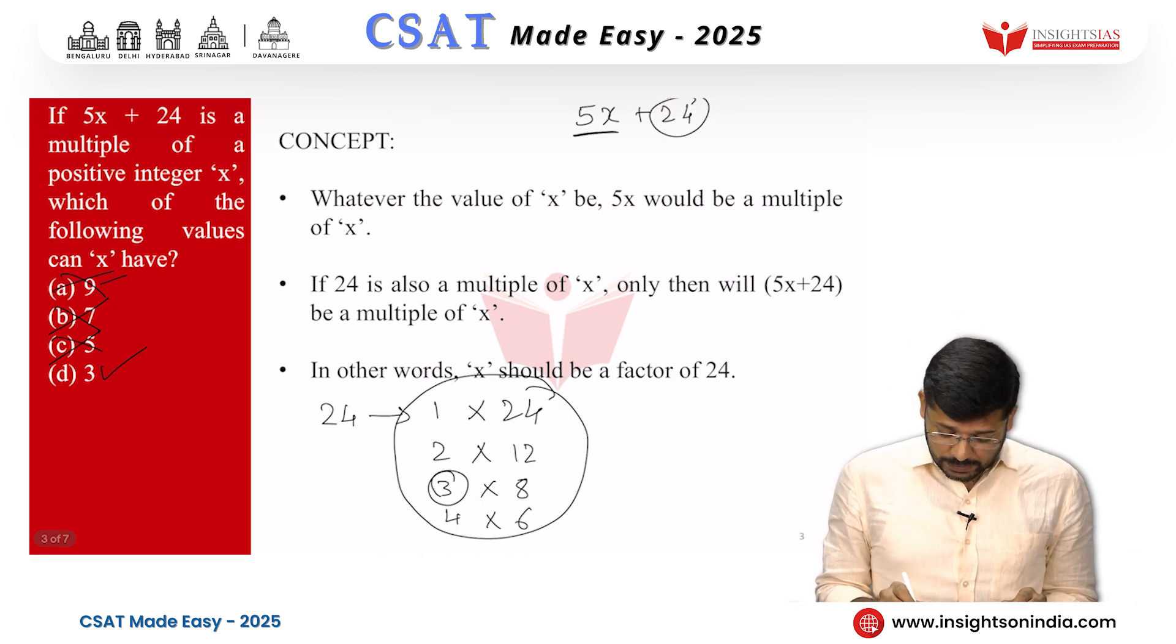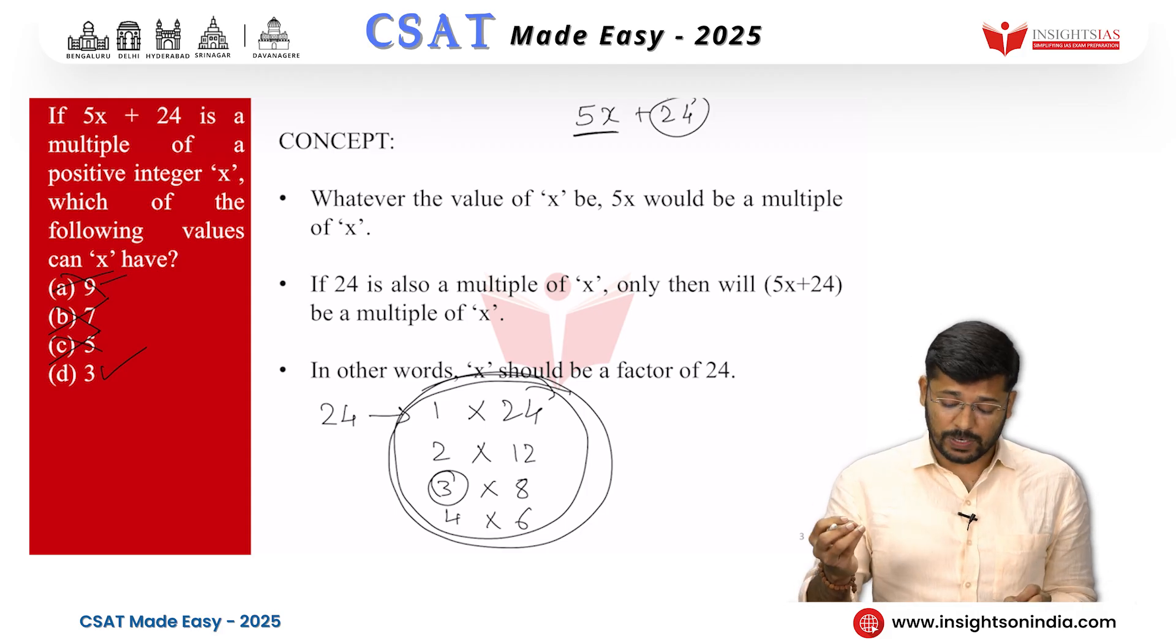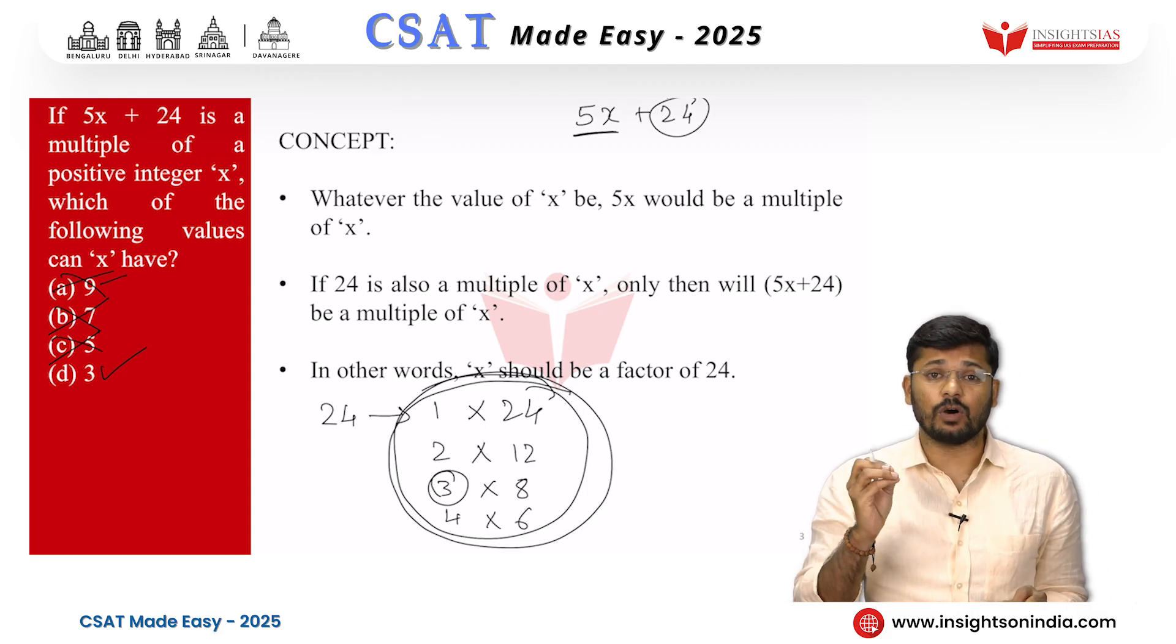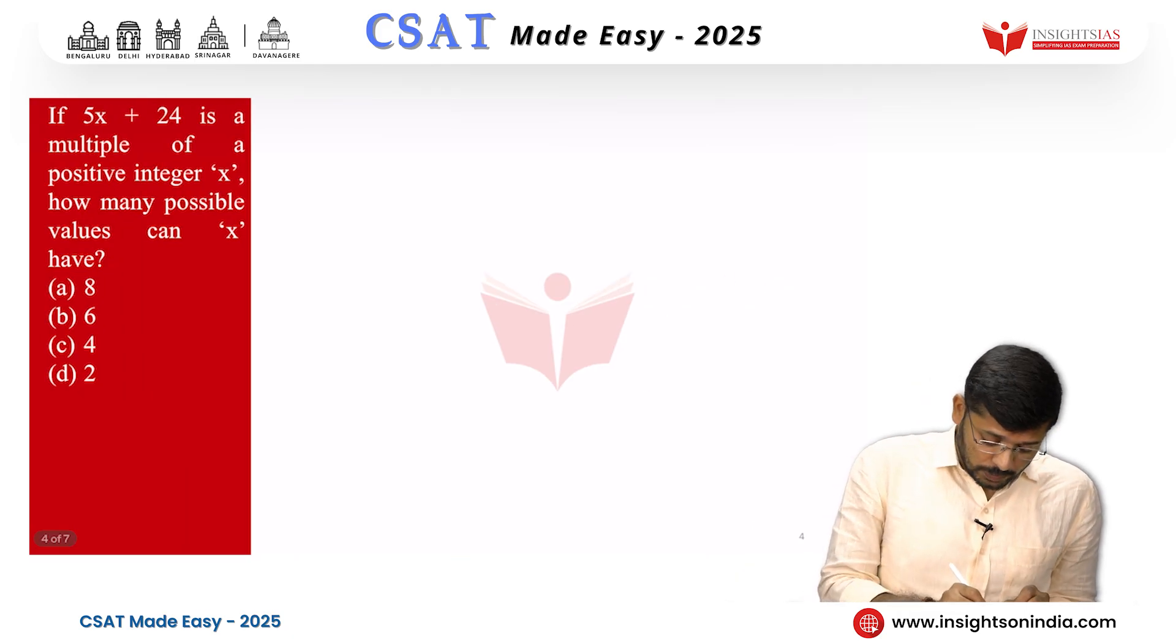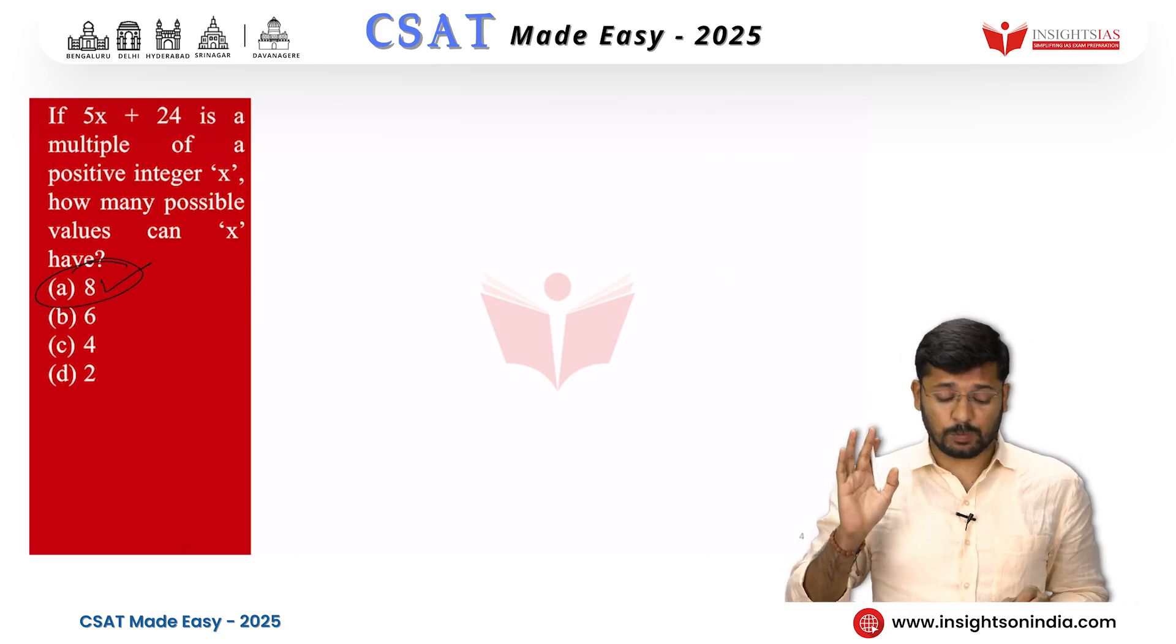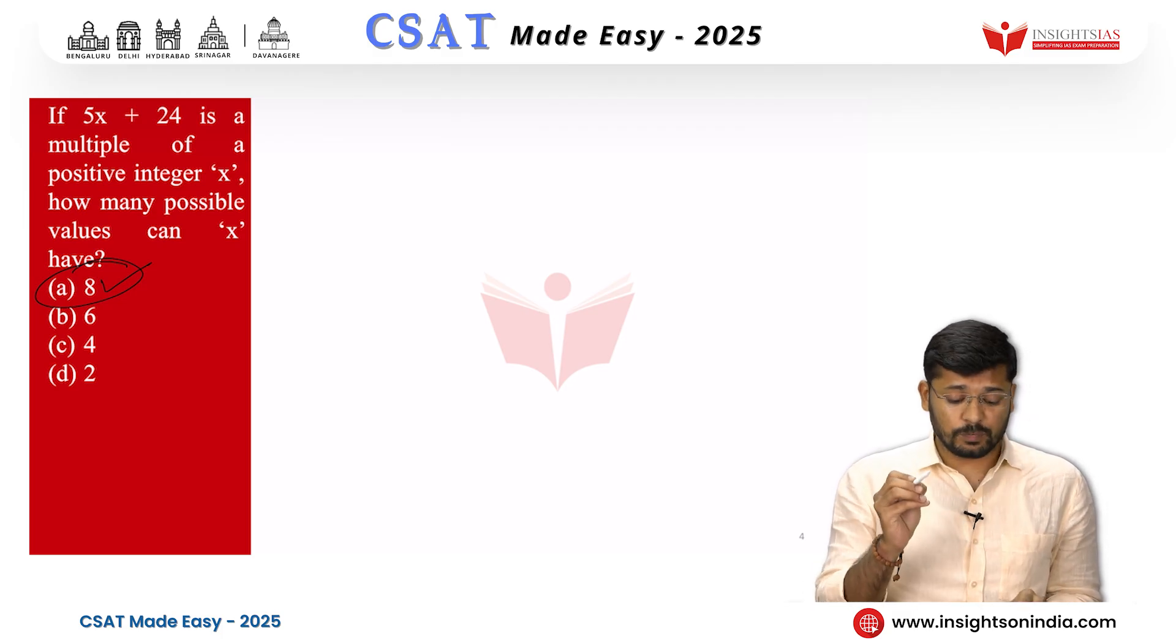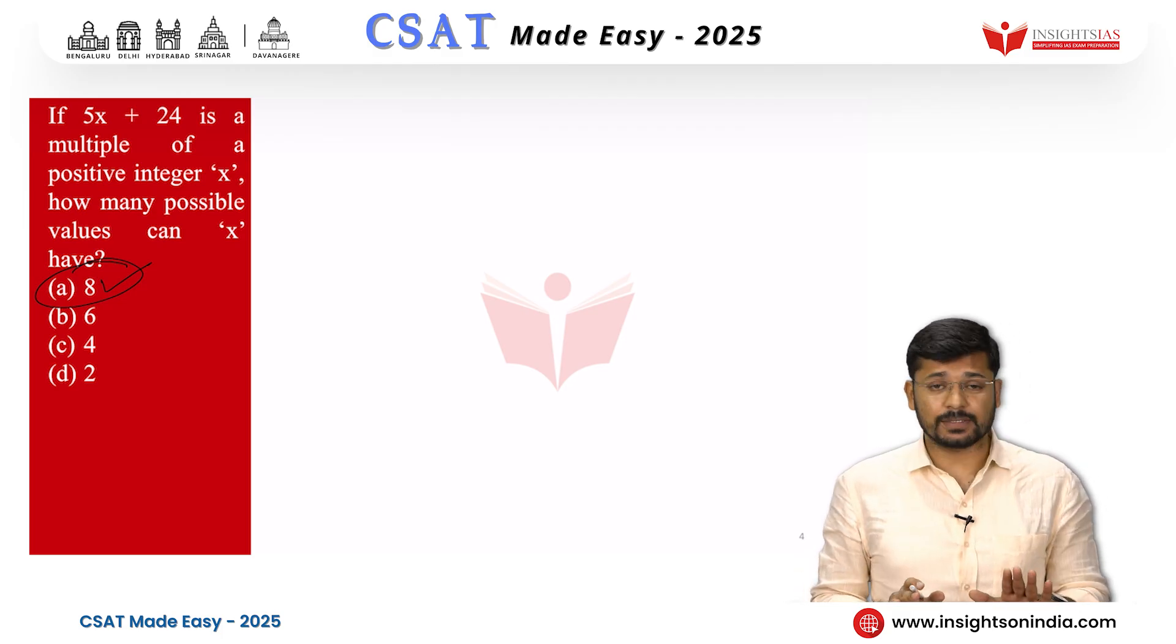We have already answered this in the previous forum. x can take any of these 8 numbers. x can be 1, x can be 24, x can be 2, 12, 3, 8 or 4 or 6. So the possible values of x are 8. x has totally 8 possible values. It can take any value. Then 5x plus 24 will be a multiple of x.